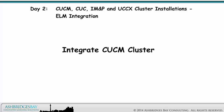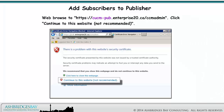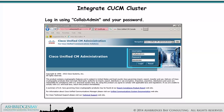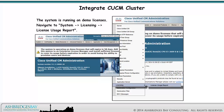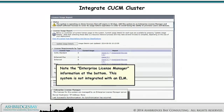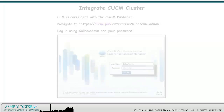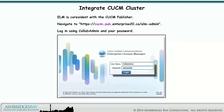We'll integrate the CUCM cluster first. Launch your browser — we use Internet Explorer. Web browse to this address. Ignore the security warning and click Continue to this website. Log in using Collab Admin, the application name you configured during installation, and your password. The system is running on demo licenses. Navigate to System > Licensing > License Usage Report. Note the Enterprise License Manager information at the bottom — this system is not integrated with an ELM. For Enterprise 20, ELM is co-resident with the CUCM publisher.